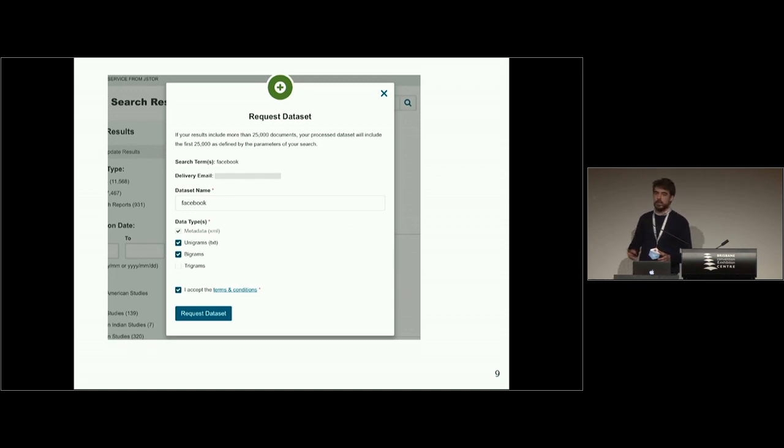And we could then request a data set where we can choose which type of data we want to get. We always get metadata as XML, but we also can get unigrams, bigrams, trigrams. And if you make a special request which has a bit more paperwork and takes longer, you can actually get the whole content of the articles as text files. What do we then get? We get an email where we can download a link, where we can download a zip file which then contains all of this content.